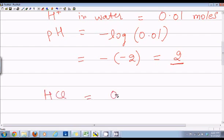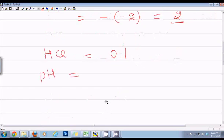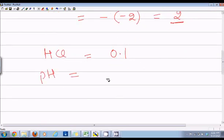Similarly, if HCl is equal to 0.1 and we want to find the pH of the solution, the pH will be equal to negative log of 0.1.